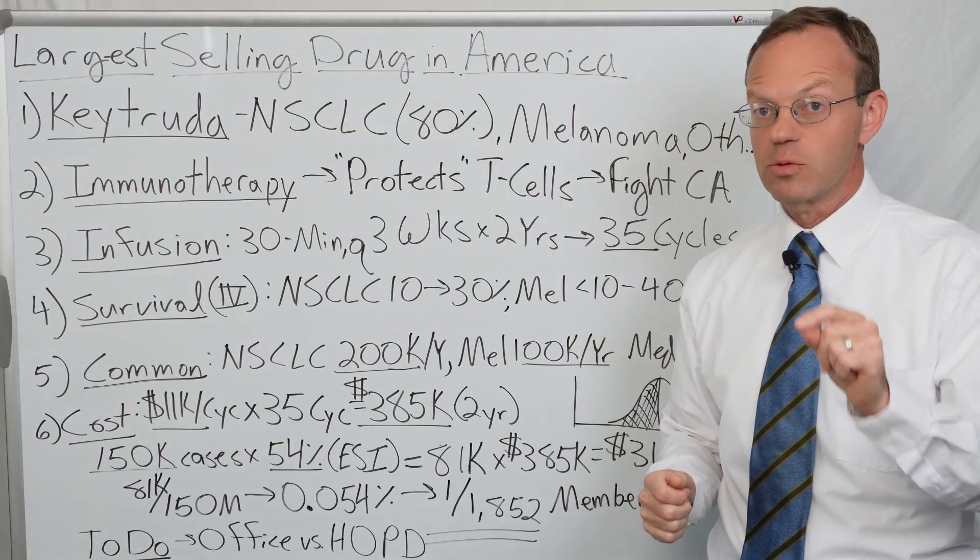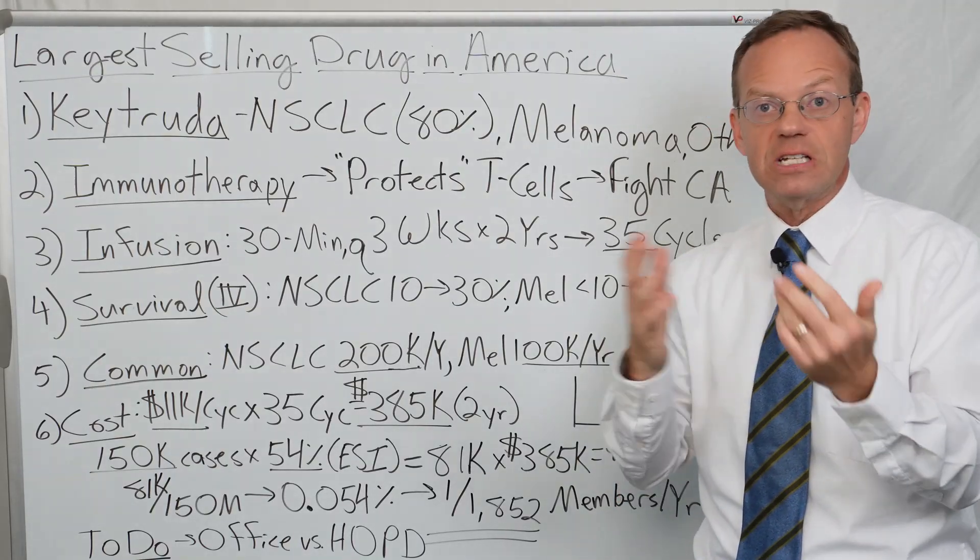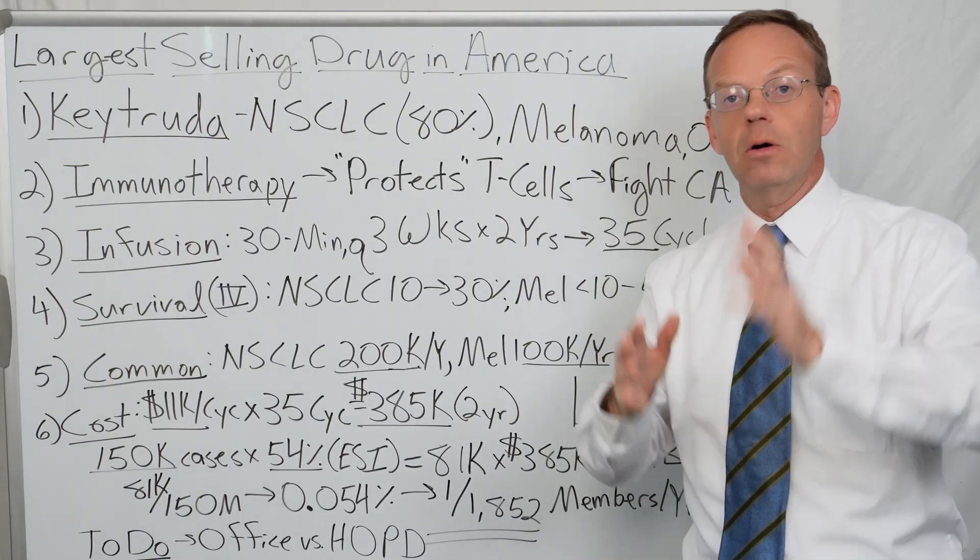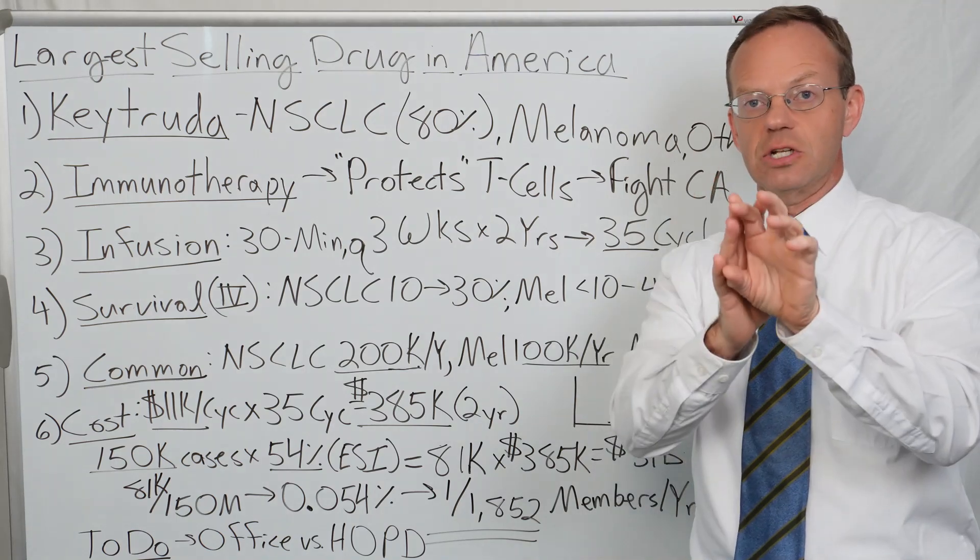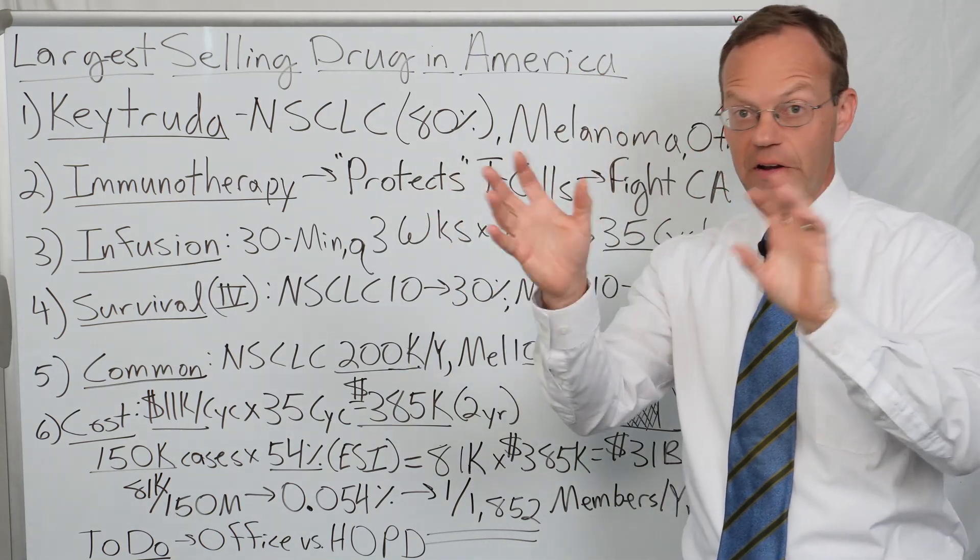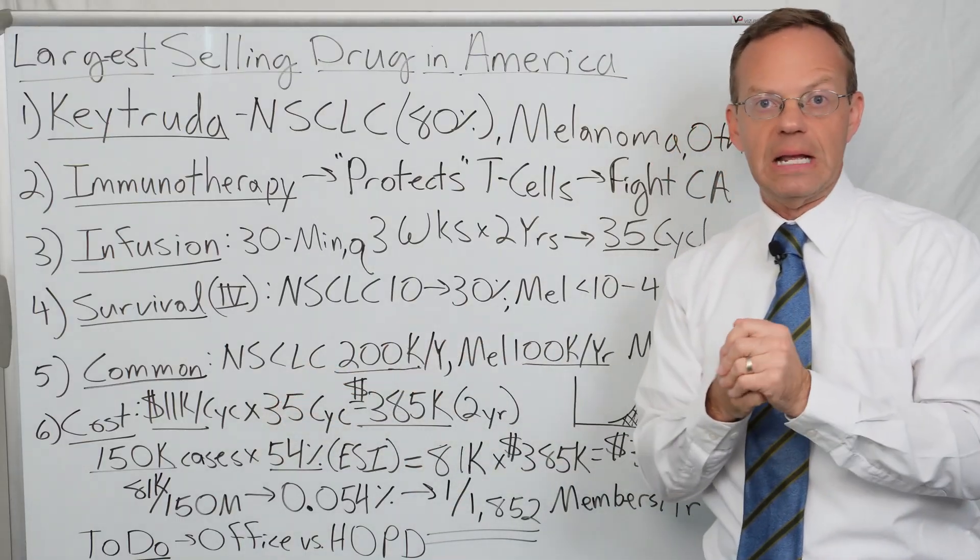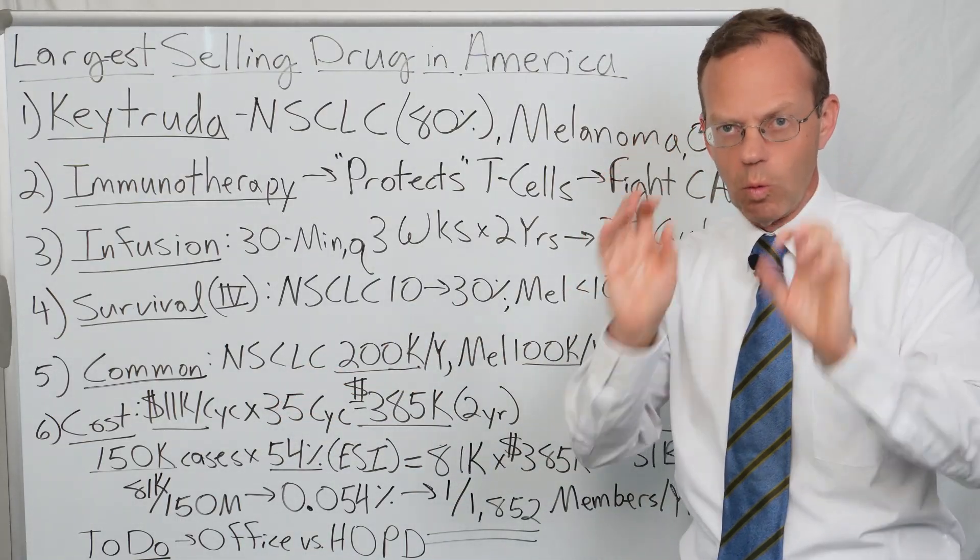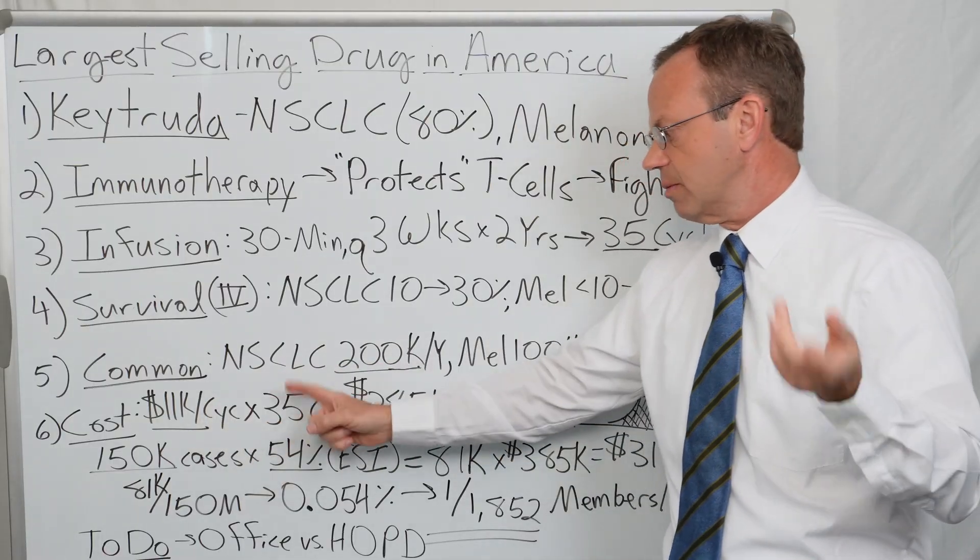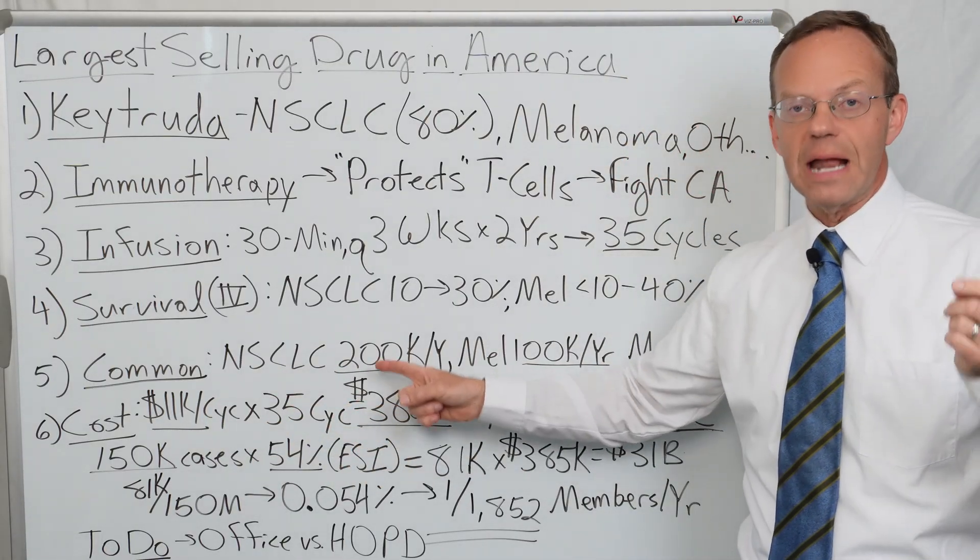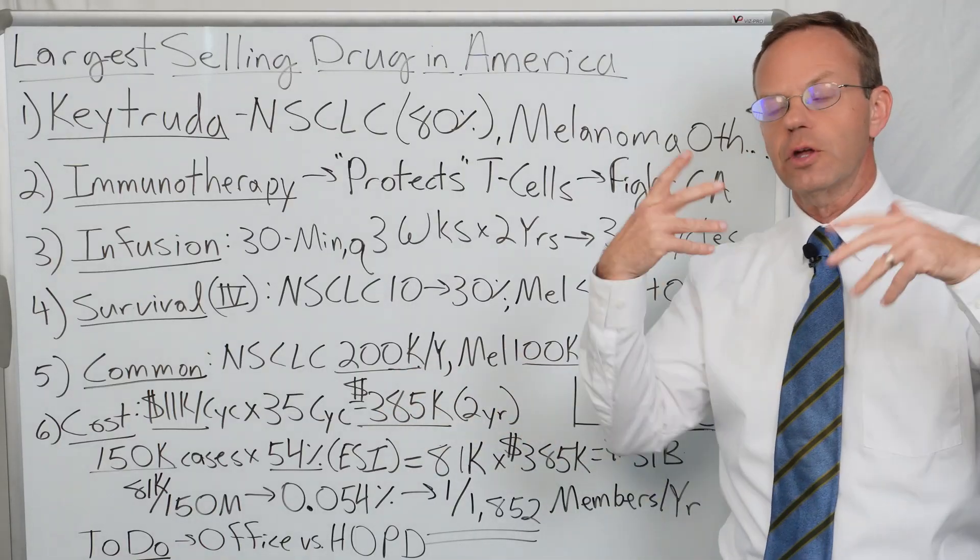I have seen medical claims where Keytruda is over $20,000 per cycle. It varies depending upon how the provider has negotiated with the insurance network. If you take $11,000 and multiply by 35 cycles, that means it's $385,000 over two years for the course of treatment.